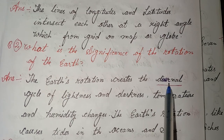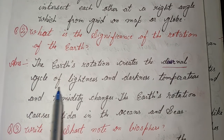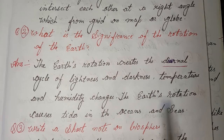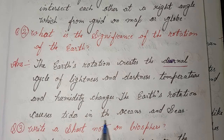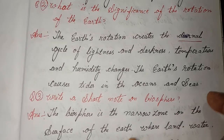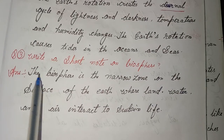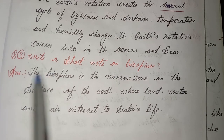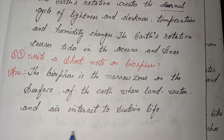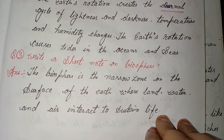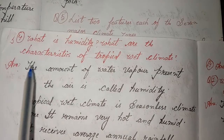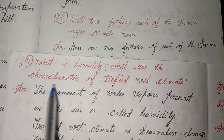Earth's rotation creates the diurnal cycle of lightness and darkness, temperature and humidity changes. The earth's rotation also causes tides in the oceans and seas. Third, write a short note on biosphere. Answer: The biosphere is the narrow zone of the surface of the earth where land, water, and air interact to sustain life.